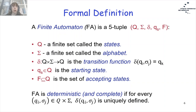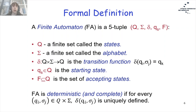A Finite Automaton is called deterministic and complete if for every Qi and sigmaJ we have one uniquely defined resulting state. That is, for each state and letter of the alphabet we have only one state we can move to — then the automaton is called a deterministic automaton.